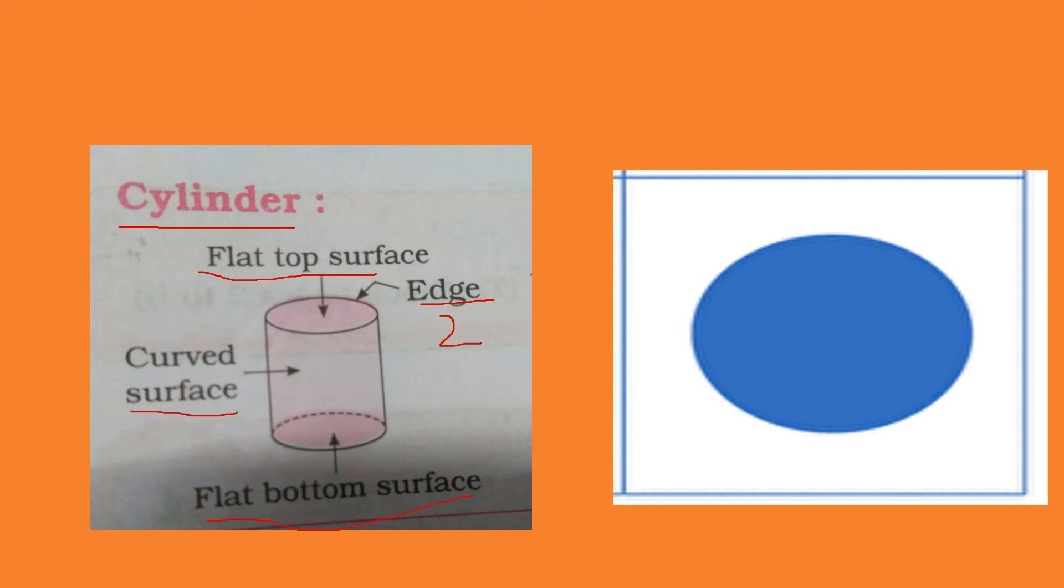The next is sphere. A sphere does not have any edges or corners. It has only a curved surface. Some examples of cylinders are pipes, cold drink cans, etc.